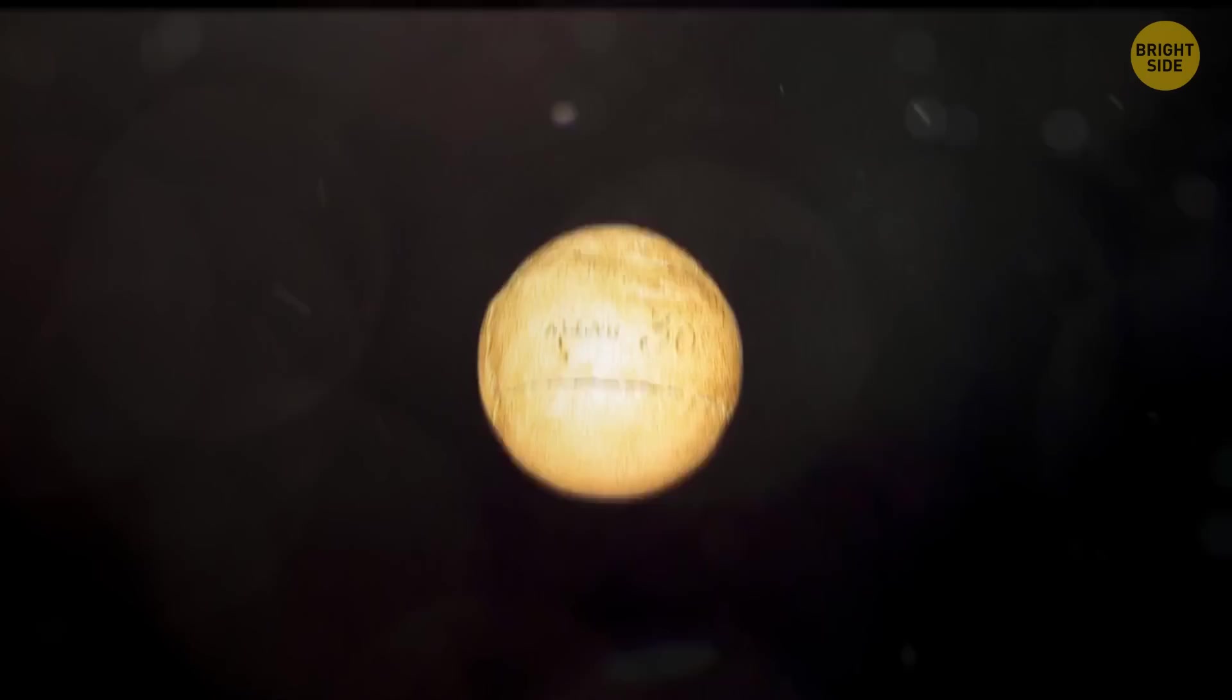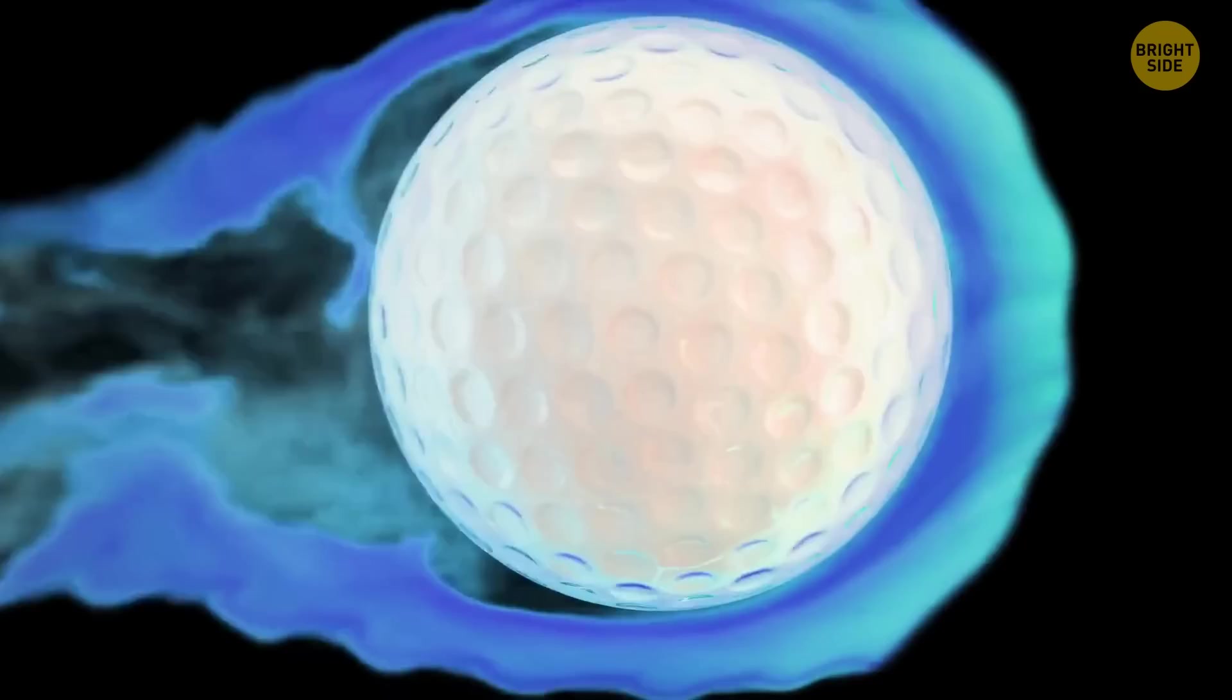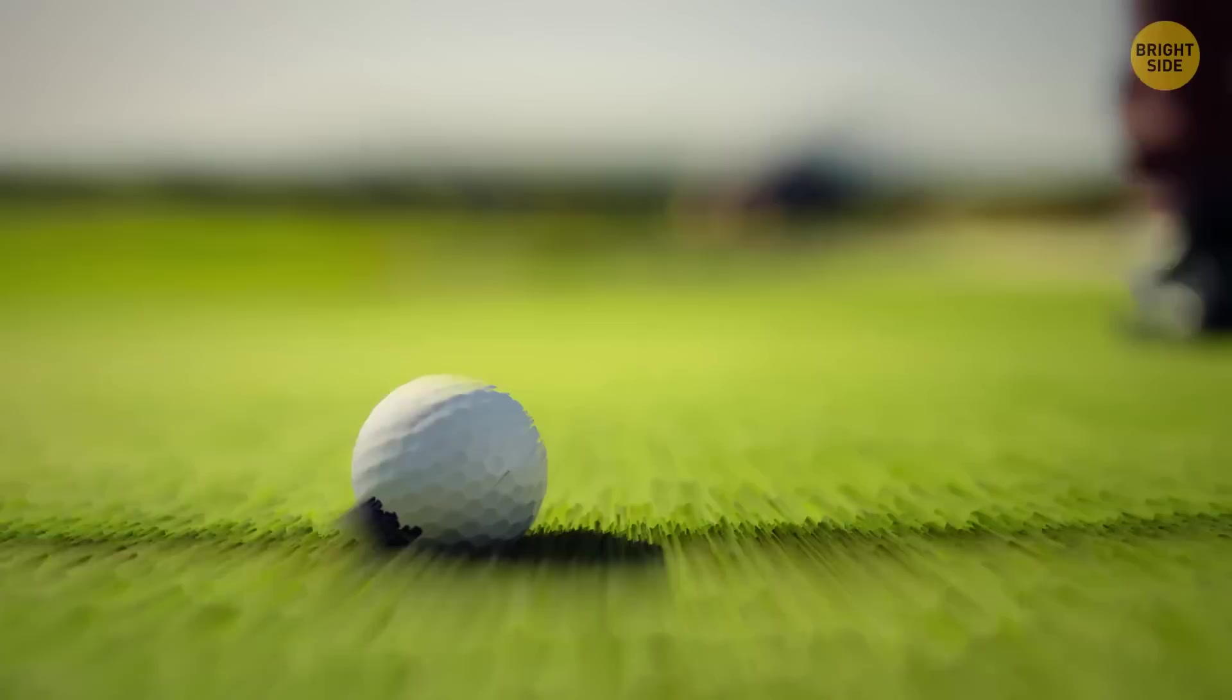Originally, golf balls were smooth. They have a dimpled surface now because players noticed that overused balls with damages flew better than brand new ones. At some point, manufacturers started producing balls with dimples.